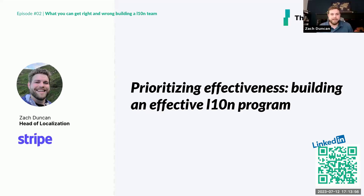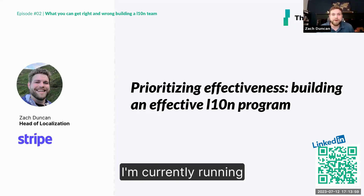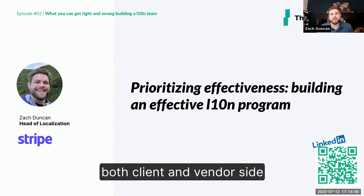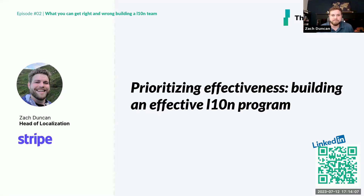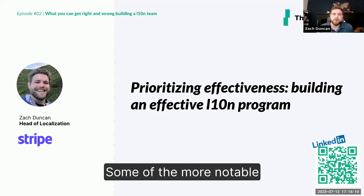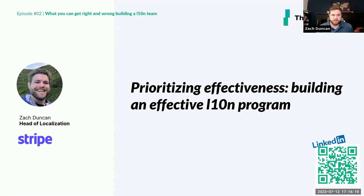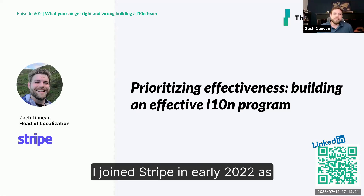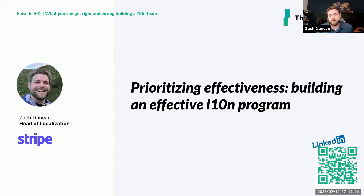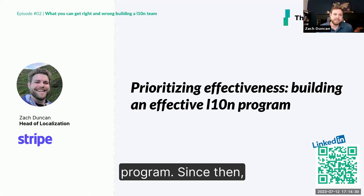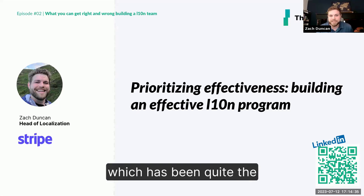Hi everyone, I'm Zach. It's my pleasure to be here. I'm currently running localization for Stripe, bringing about a decade of experience in the industry, working both client and vendor side. Some of the more notable companies I've worked for are Uber, Lionbridge, and The Big Word. I joined Stripe in early 2022. The original role was to develop a more formal quality program, and since then I've taken over running it at a higher level, which has been quite the experience and also quite an honor.